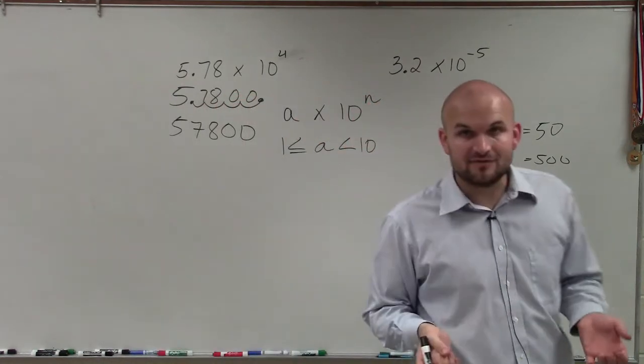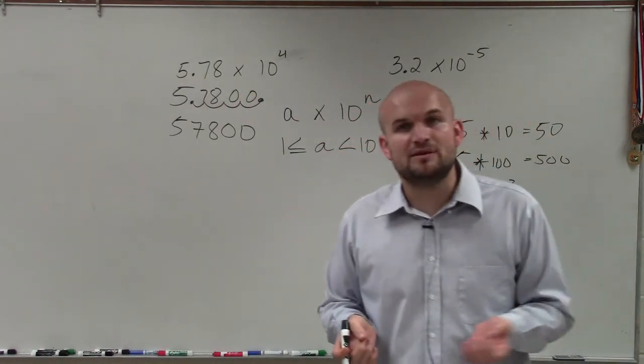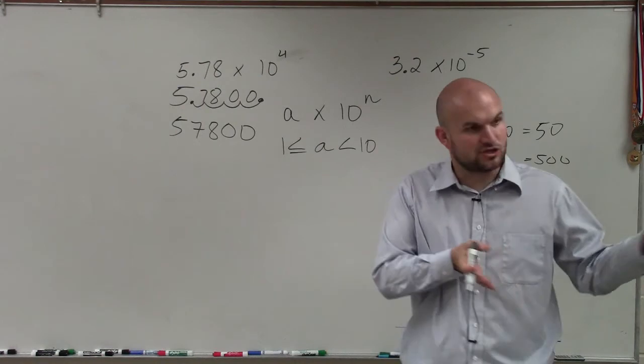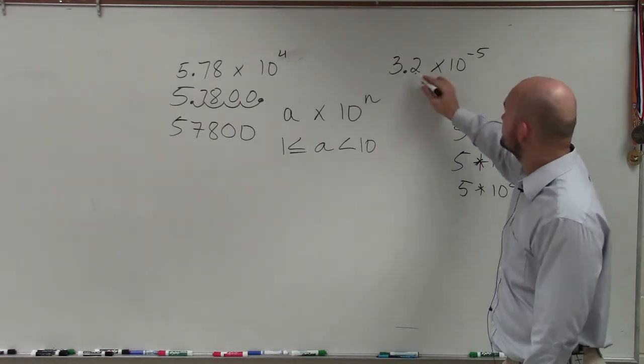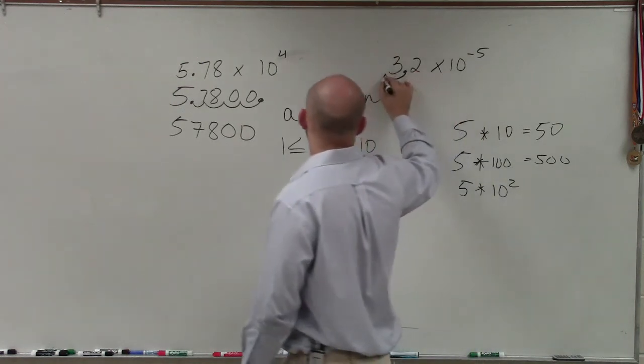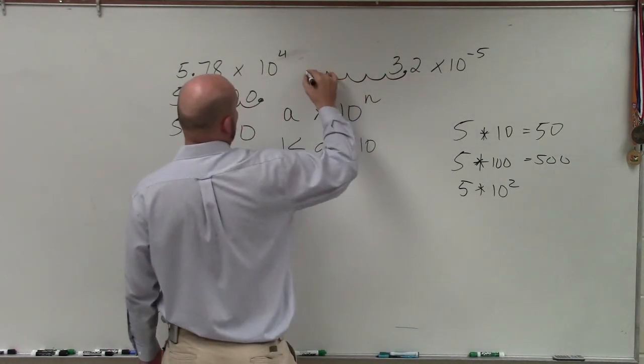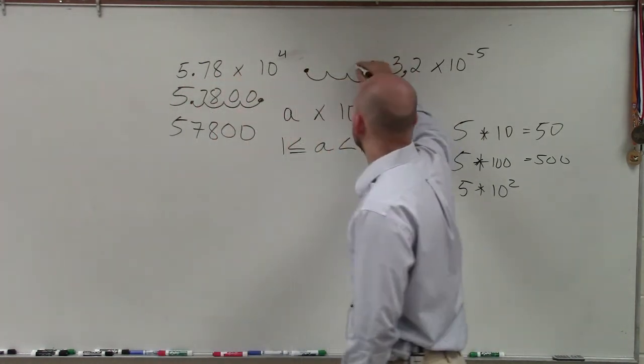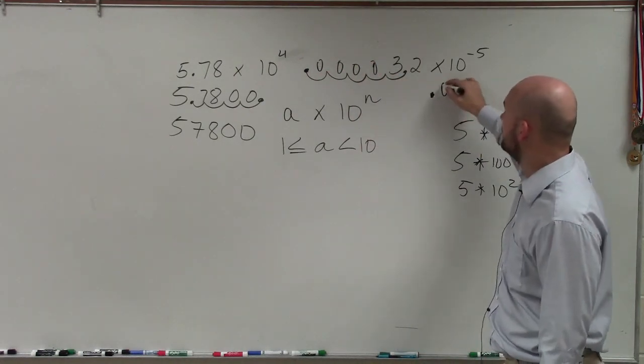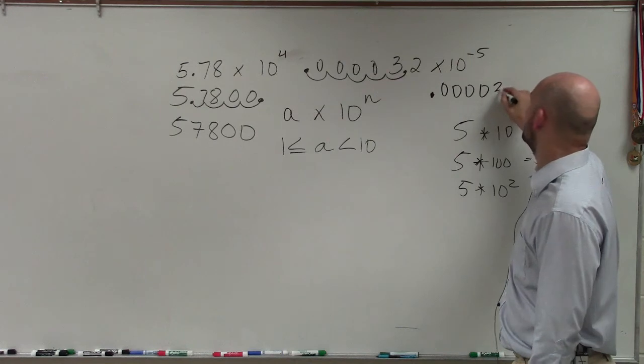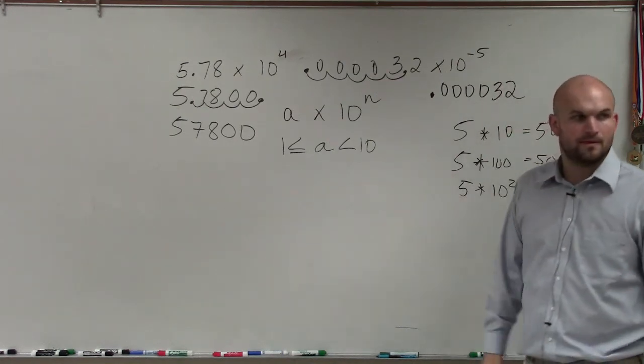When I have a negative, I am going to be moving my place value to the left, just like dividing by 100. You're just moving the place value to the left. So in this case, I'm going to move it 1, 2, 3, 4, 5. And then again, to represent all these place values, I'm going to use 0. So my final answer is 0.123432. Capisce?